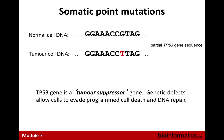Somatic point mutations — this is p53, a tumor suppressor gene. Genetic defects in this gene allow cells to evade programmed cell death and DNA repair. In contrast to yesterday's copy number events that are hundreds to thousands of base pairs long, these are typically very small — one base pair or just a few base pairs for indels. Somatic events are changes that happen only in the tumor cells and not in the germline of the individual.